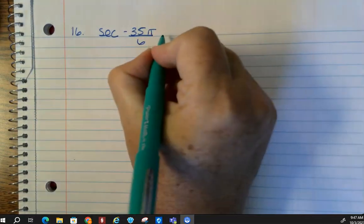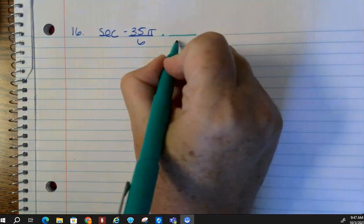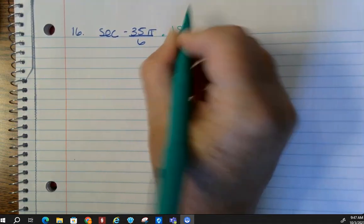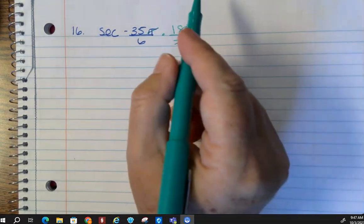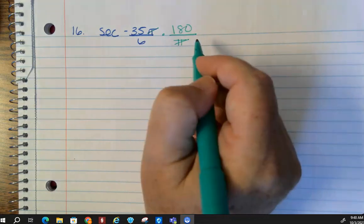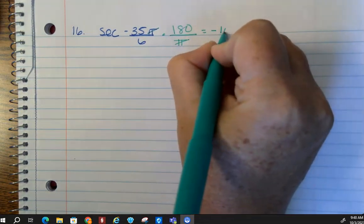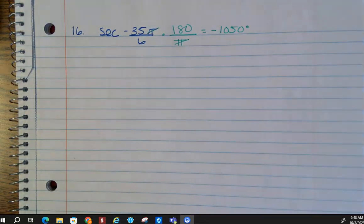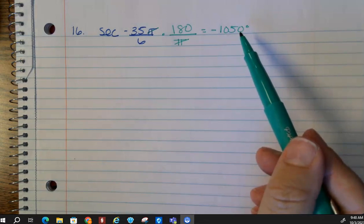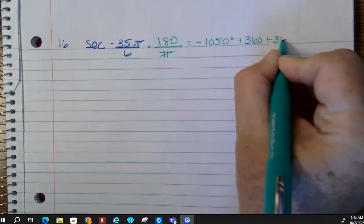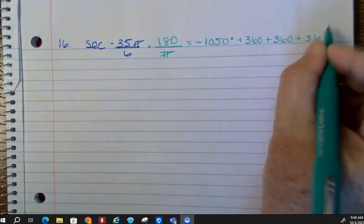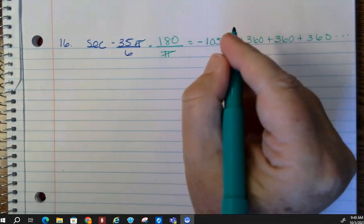So what we're going to do is first we've got to convert this into degrees. So if I have pi on top, pi here, these cancel out. I multiply across the top and divide and I get negative 150 degrees. Now remember, this is not on the unit circle, so you're going to keep adding 360 multiple times, and I got it all the way to 30 degrees.